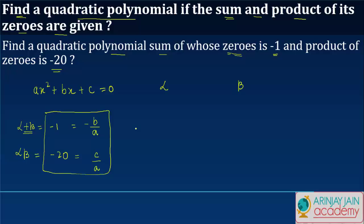In other words, this gives us that minus b is equal to minus a, or b is equal to a. Similarly, c is equal to minus 20a.